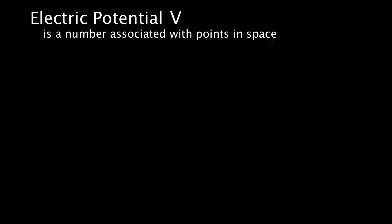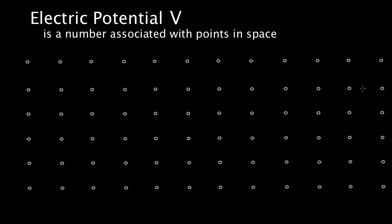You can't go hold electric potential in your hand. It's an abstract number at every point in space. Here are points in space — I just put circles around empty spots on the screen, circles around empty points in space so we can talk about them explicitly. If there was no charge around, if you literally had an empty universe, the V value at every point would be zero. The number associated with every point in space would be zero — boring and useless.